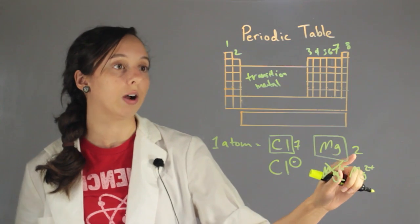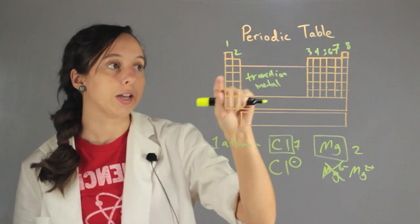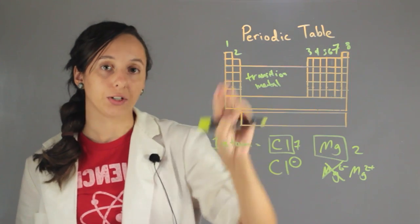Because if it has two valence electrons, if it loses those two, it'll go back to having eight at the next row below it.